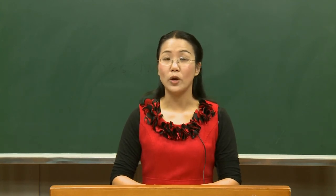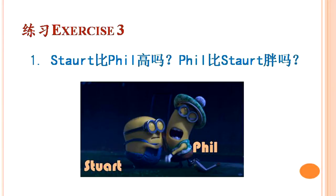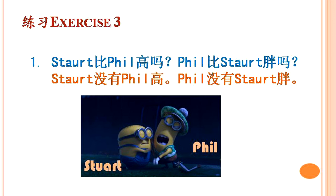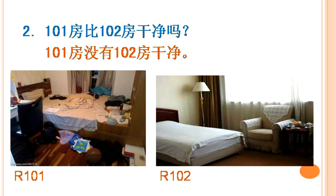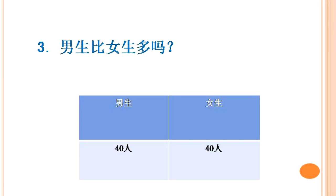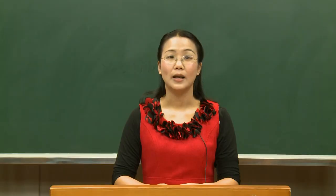The last exercise we will do today is to answer the following questions: Stout比Phil高吗? Phil比Stout胖吗? — Stout没有Phil高. Phil没有Stout胖. 101房比102房干净吗? — 101房没有102房干净. 男生比女生多吗? — 男生不比女生多. 苏山比安迪高吗? — 苏山不比安迪高.